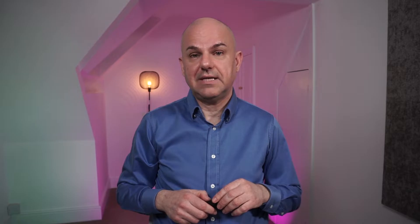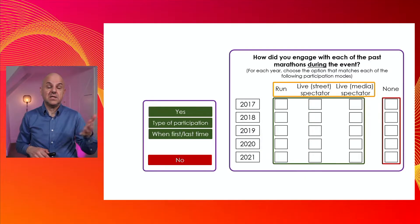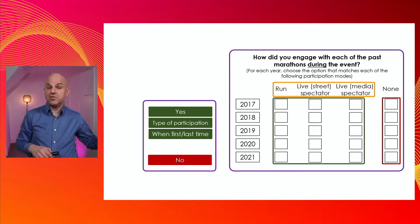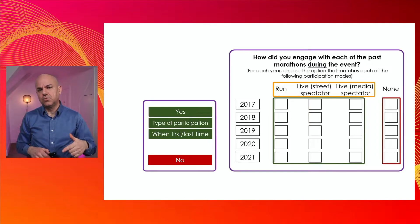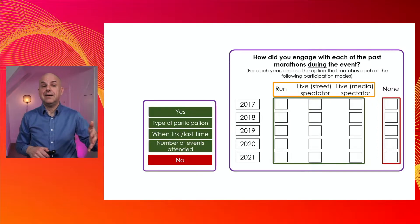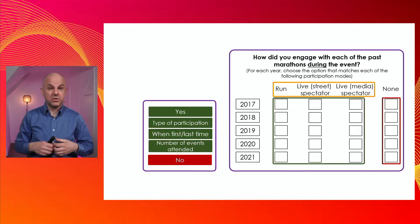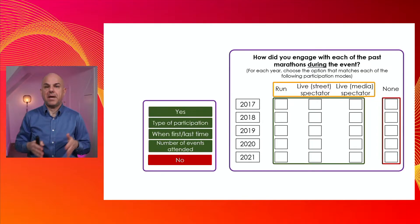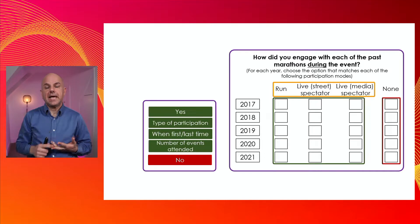That can be useful information to understand how they got involved with the event. The next element is about when they first and last attended, but unlike the previous format, we can answer that question based on the mode of participation — when they first and last ran, when they first and last were a street spectator, and when they were first or last a media spectator. We can also extract the number of events attended, but broken down by mode of engagement: how many times they attended as runners, as street spectators, and as media spectators.